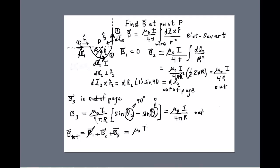I can pull out mu naught i over 4 r from both of those terms. And then B2, if I do that, that gives me a factor of 1. Then B3 would give me a factor of 1 over pi. And once again, the direction is out of the page.